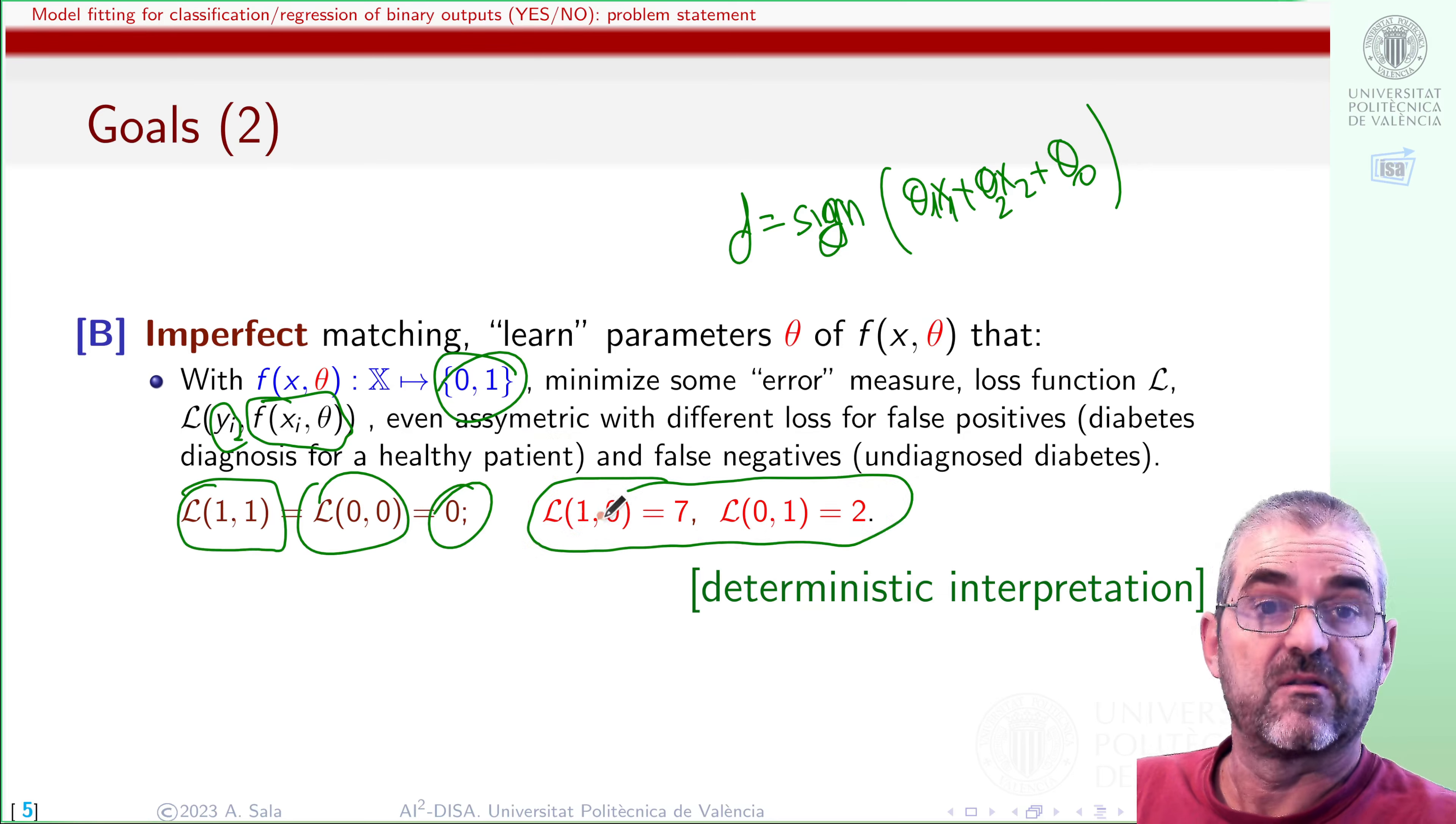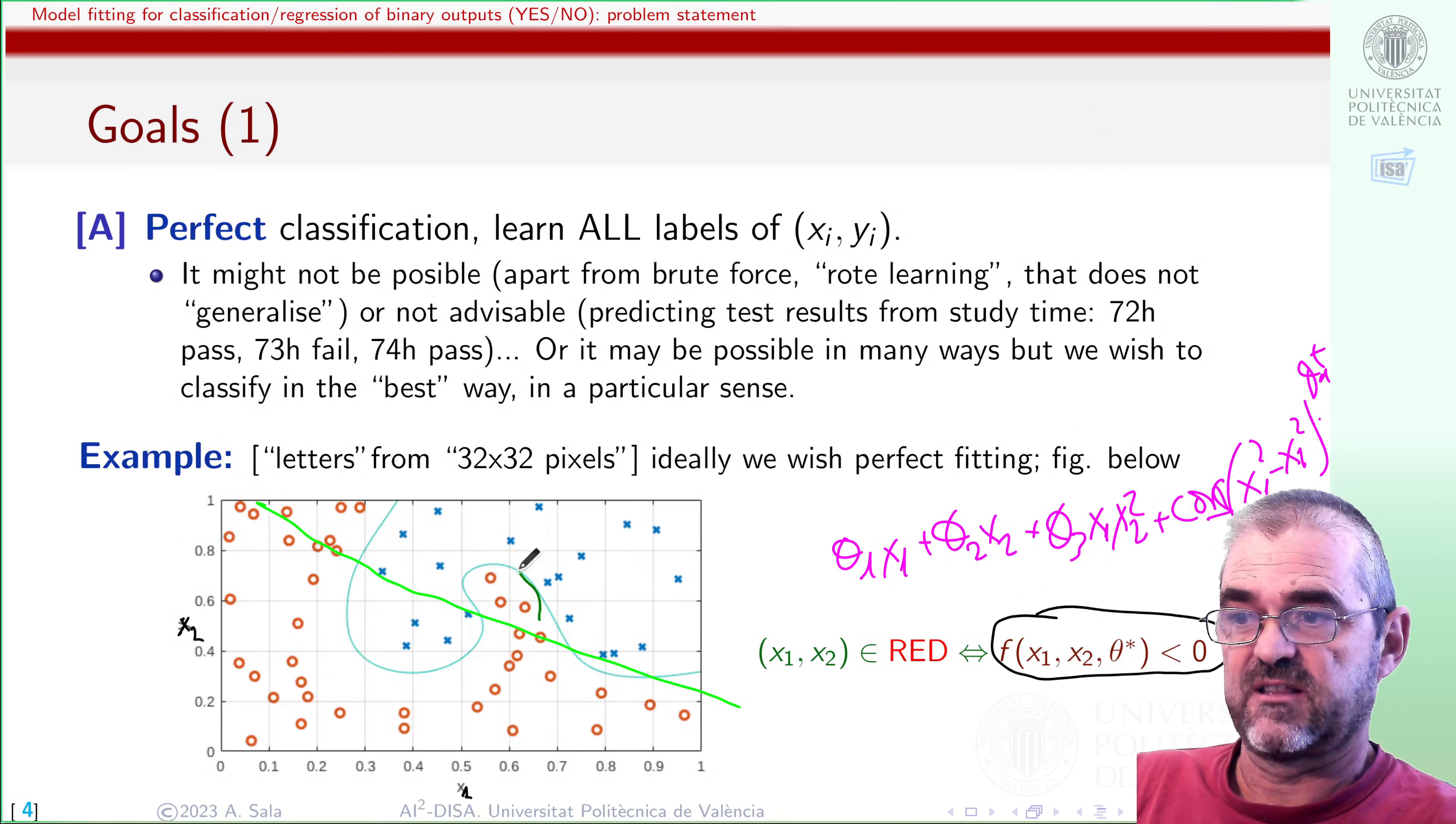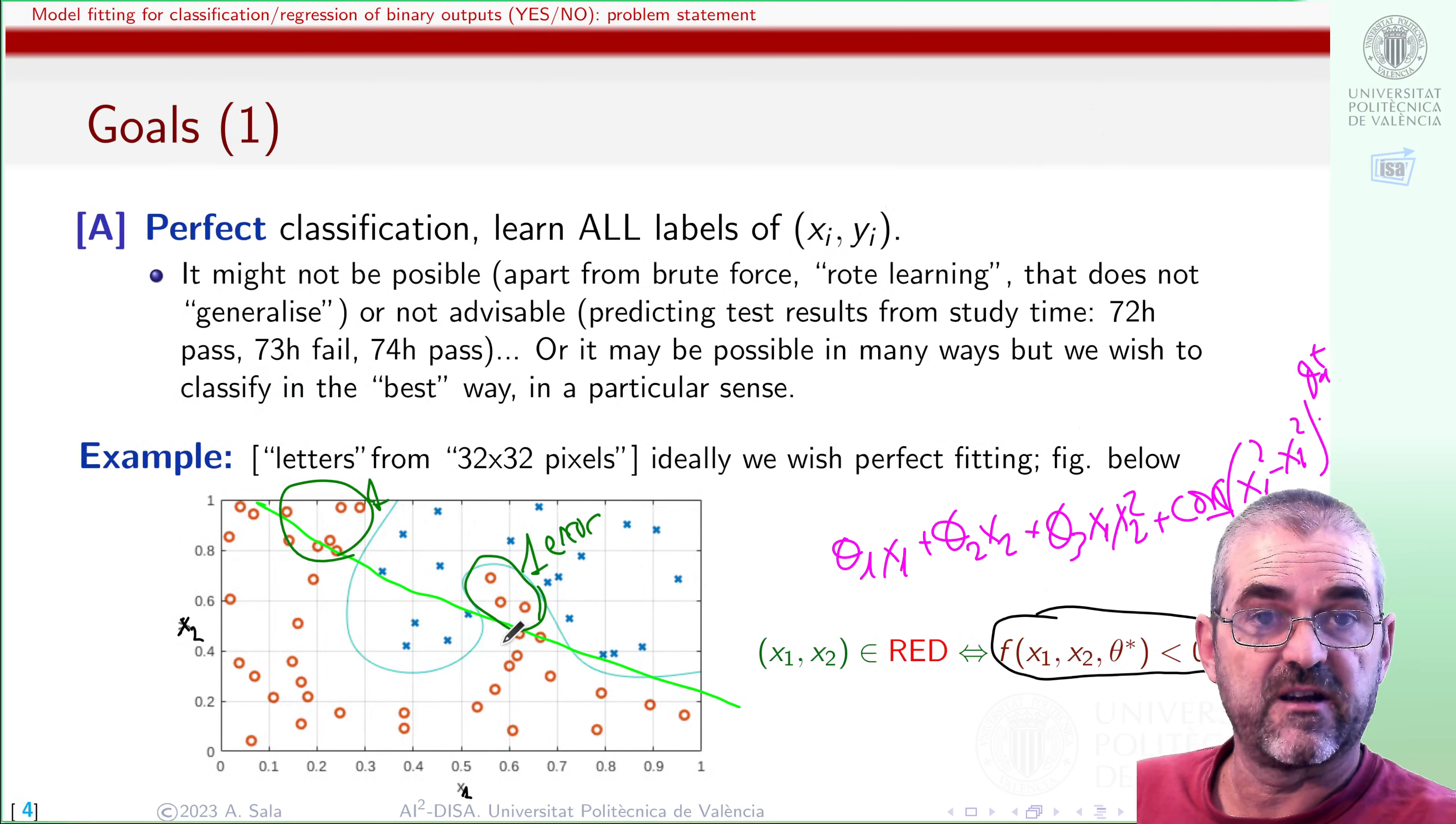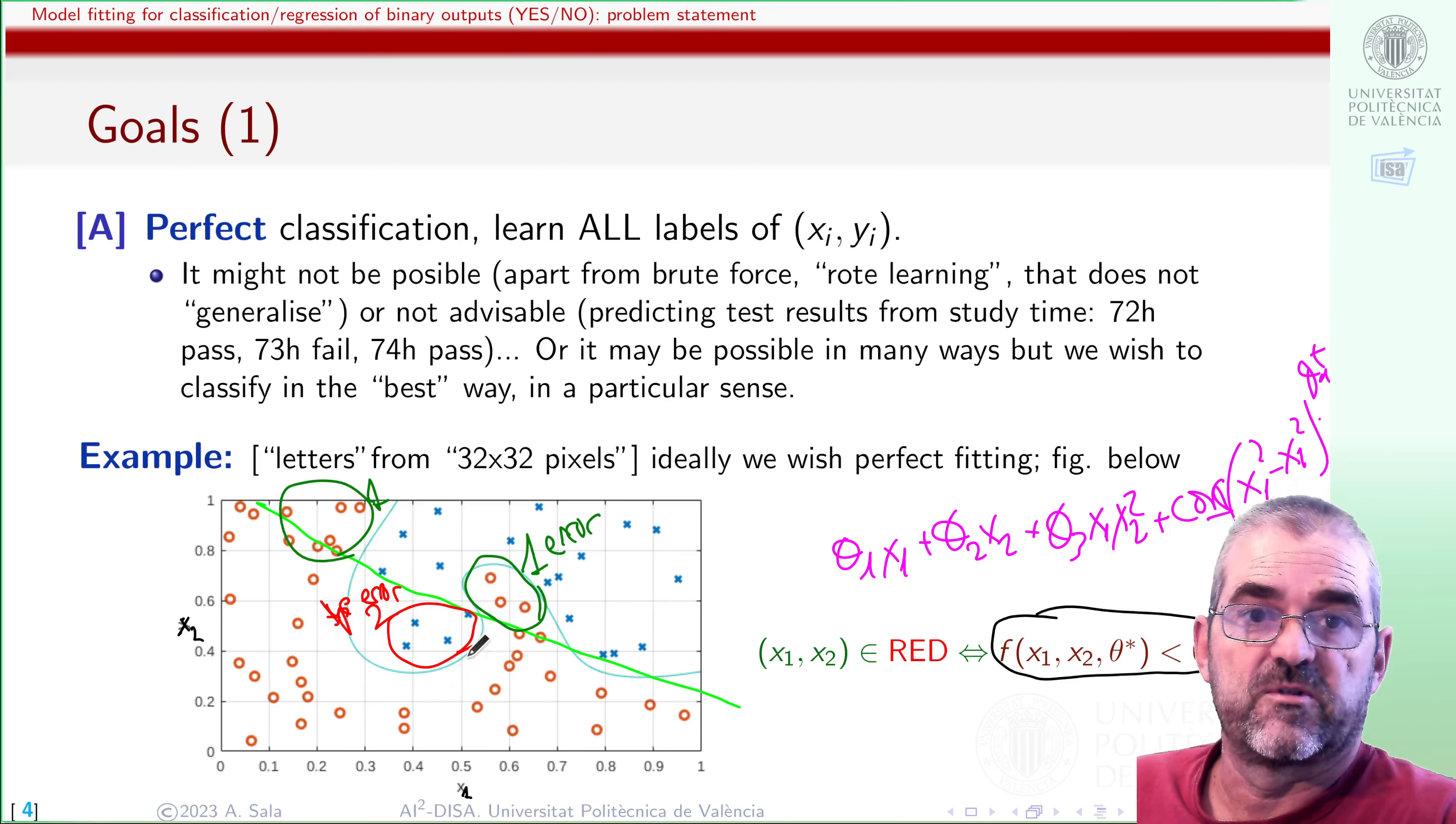But then, I must decide the loss function when my module classifies as zero, but it's one, or when my module classifies as one, and it's zero. This means, for instance, that I have a type one error here, reds get classified as blue, and type two error here, in which blue get classified as reds.